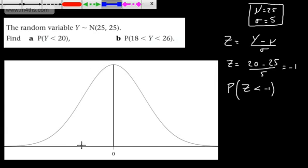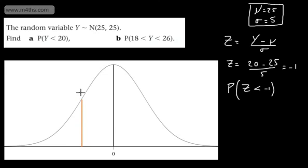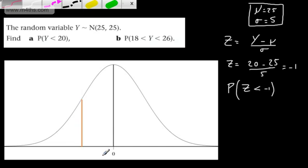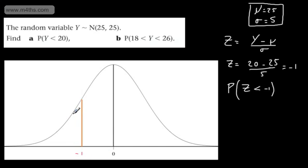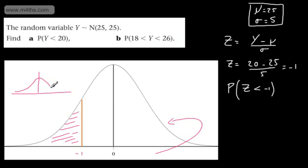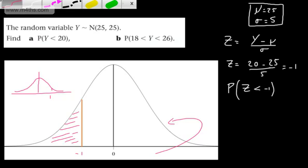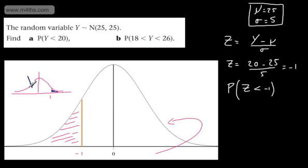We've got our standard normal tables and we're interested in the area trapped under the curve to the left of minus 1. I prefer to look at it from the back: by symmetry, we consider the positive side at plus 1 and look at the area to the right of that line. We know this area is given by phi of 1, so the area we want is 1 minus phi of 1.